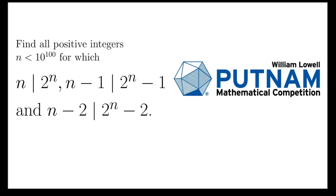Let's take a look at this problem, taken from the Putnam Mathematical Competition 2018. It says: find all positive integers n less than 10 to the 100, for which n divides 2 to the n, n minus 1 divides 2 to the n minus 1, and n minus 2 divides 2 to the n minus 2.